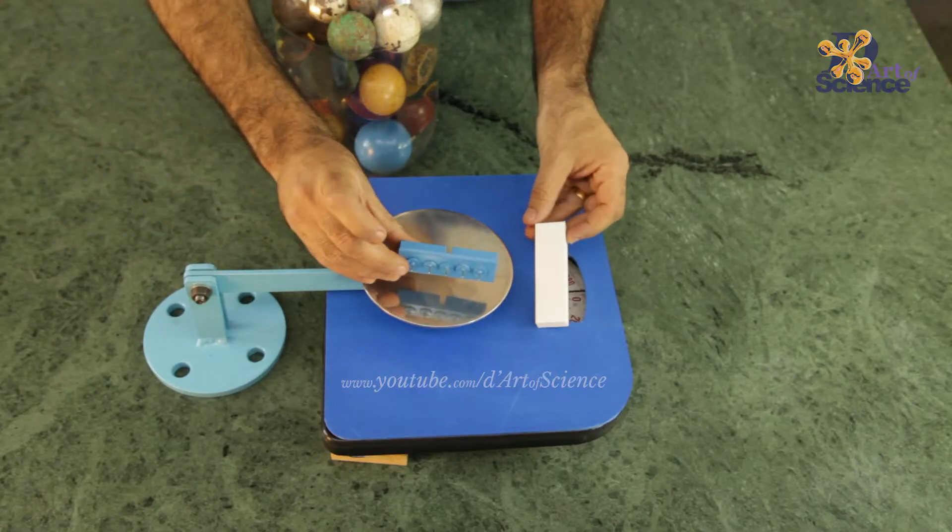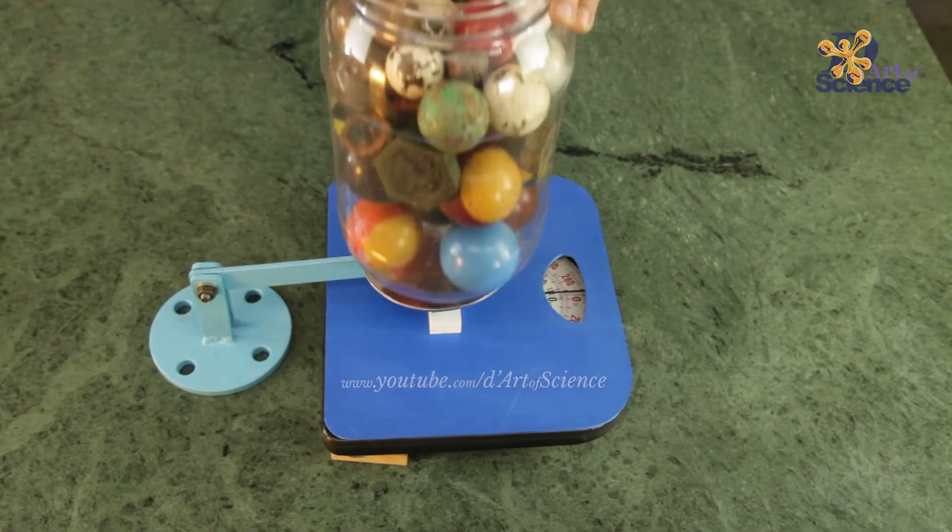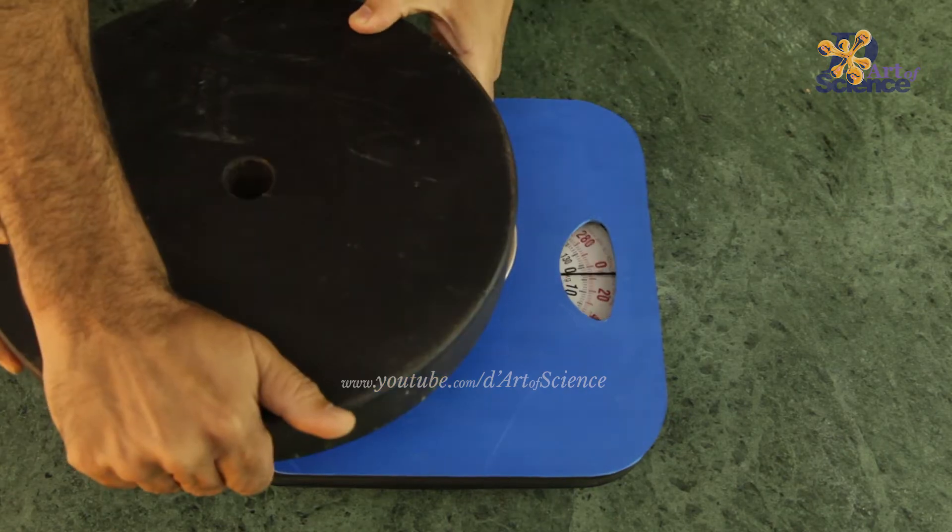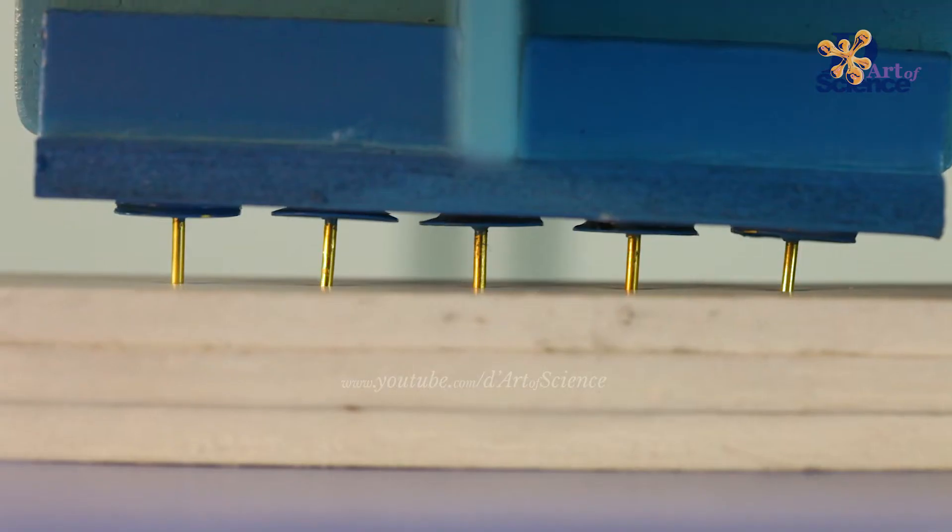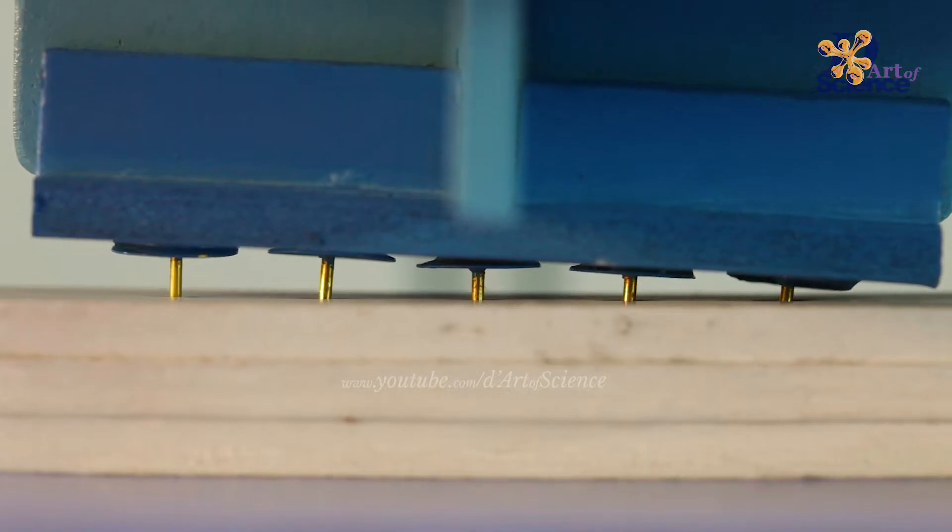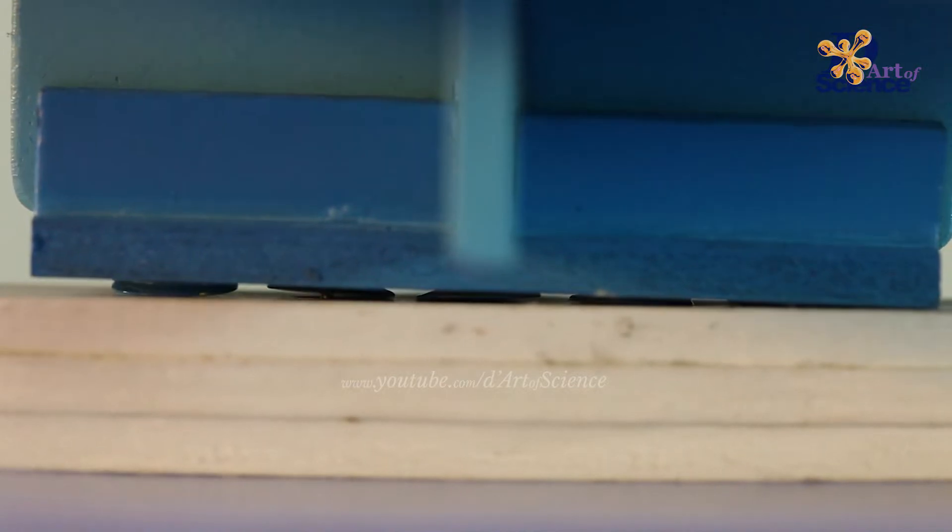Now let's put 5 pins and do the same experiment. 5 pins will increase the surface area by 5 times. So effectively the weight required on the pin should be 5 times. Let's see. We also needed to change to a heavier weight and then also had to push it down by hand. The weight required was almost 25 kgs.